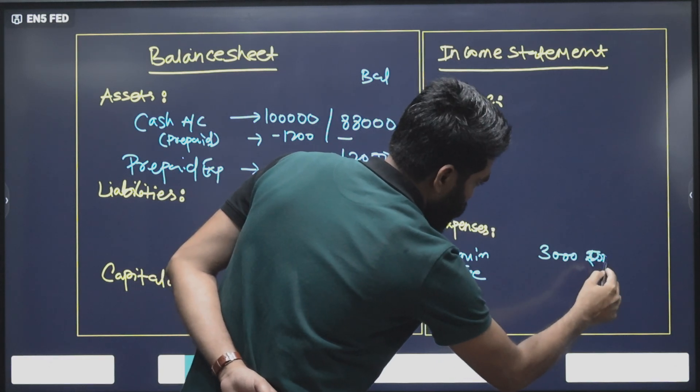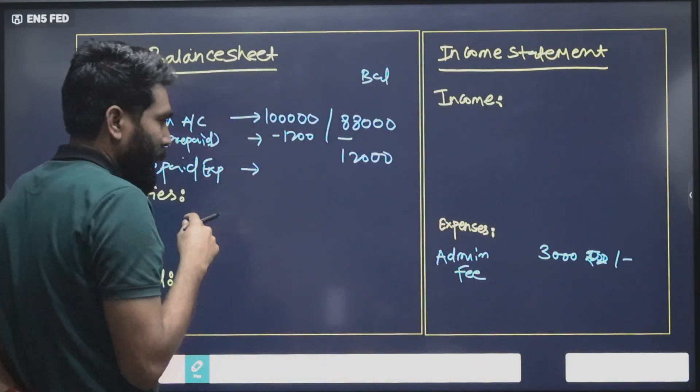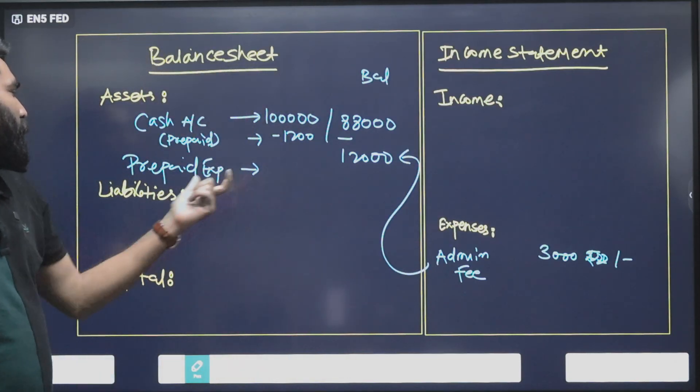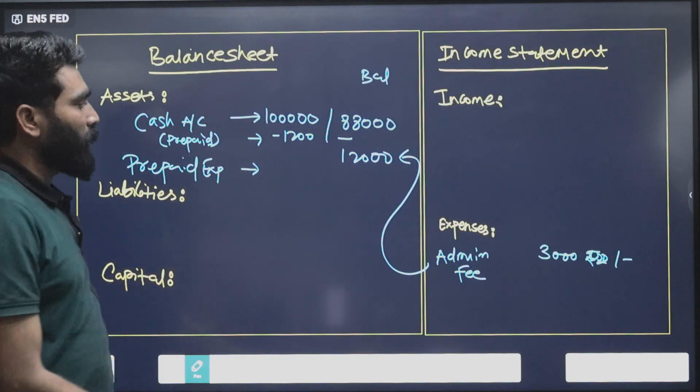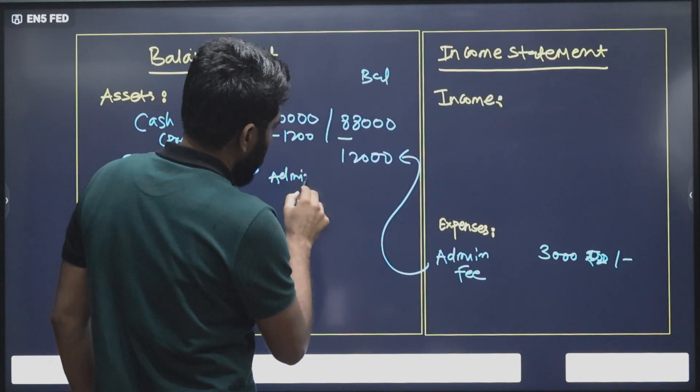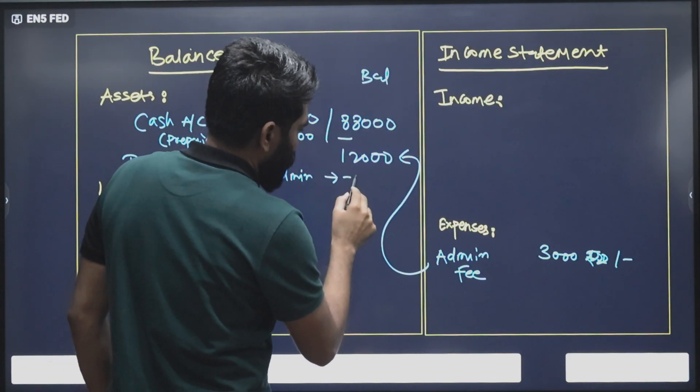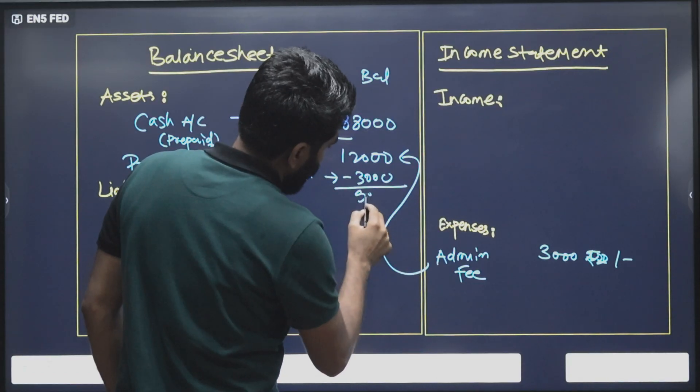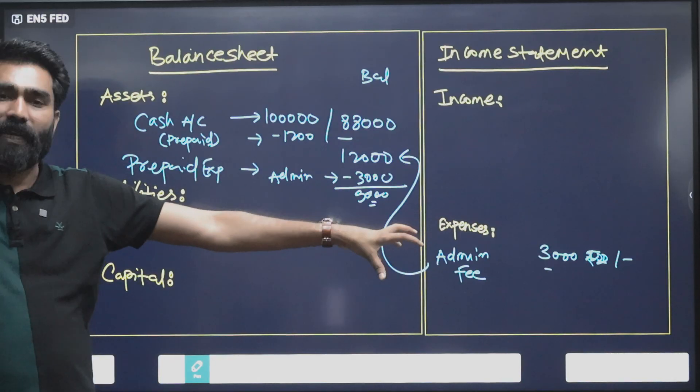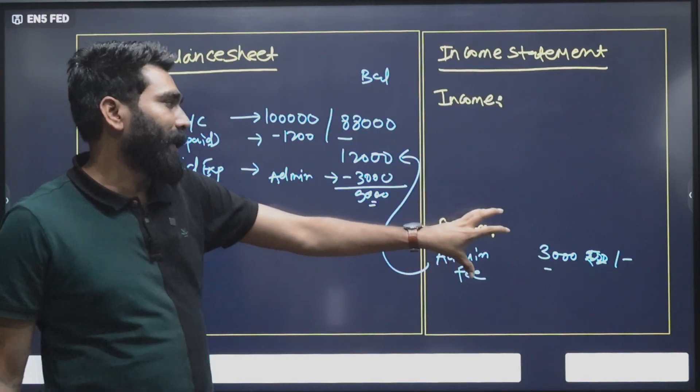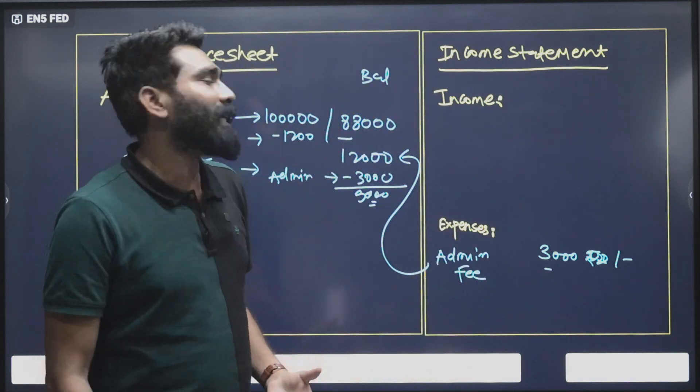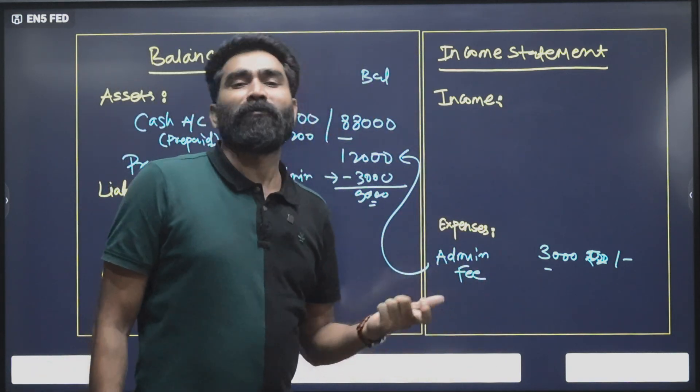The same admin fee you need to credit from the prepaid expense, so here you need to minus admin fee which is $3,000. The updated balance would be $9,000 and here $3,000. This is how amortization works.